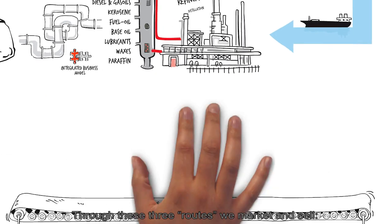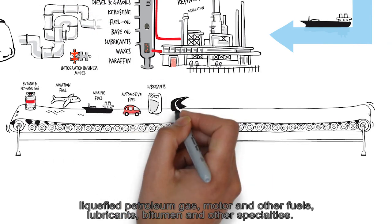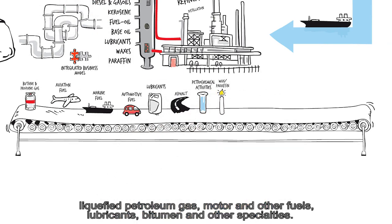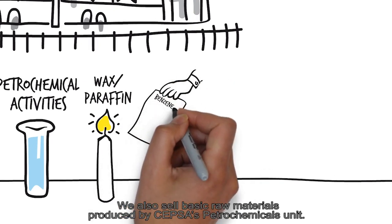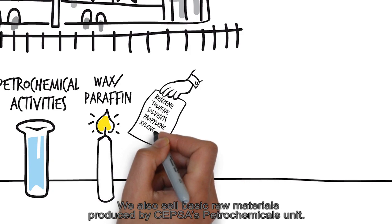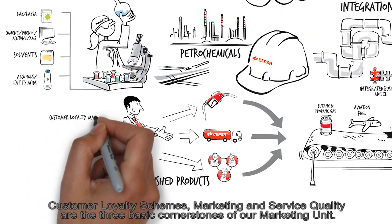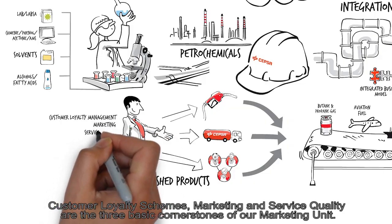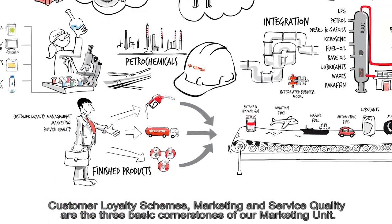Through these three routes we market and sell liquefied petroleum gas, motor and other fuels, lubricants, bitumen and other specialties. We also sell basic raw materials produced by CEPSA's Petrochemicals unit. Customer loyalty schemes, marketing and service quality are the three basic cornerstones of our marketing unit.